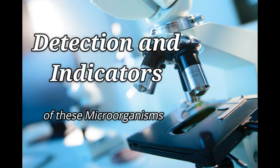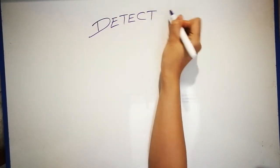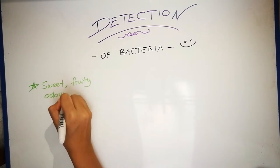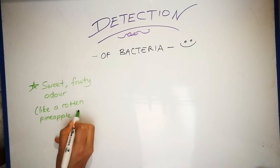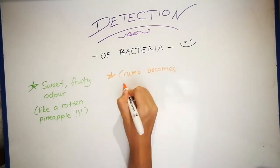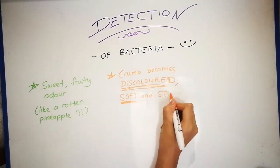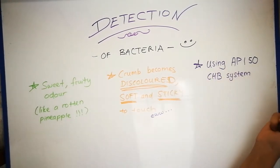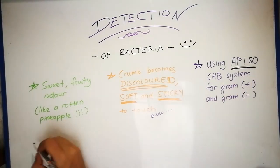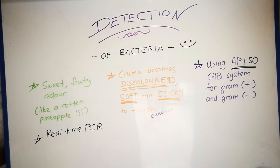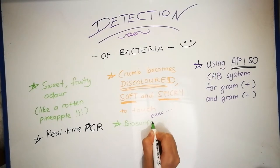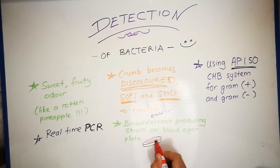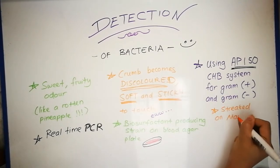Now, let's move on to the detection and indicators of these microorganisms. There are several methods used to detect bacterial growth. Firstly, the sweet, fruity odor that is similar to a rotting pineapple. Second, the crumb becomes discolored, soft and sticky to touch. Also, by using API50CHB system for gram-positive and gram-negative bacteria. Furthermore, we can use real-time PCR. Other than that, we can use biosurfactant producing strain on blood agar plate. And lastly, there is streaking on mannitol egg yolk polymyxin.